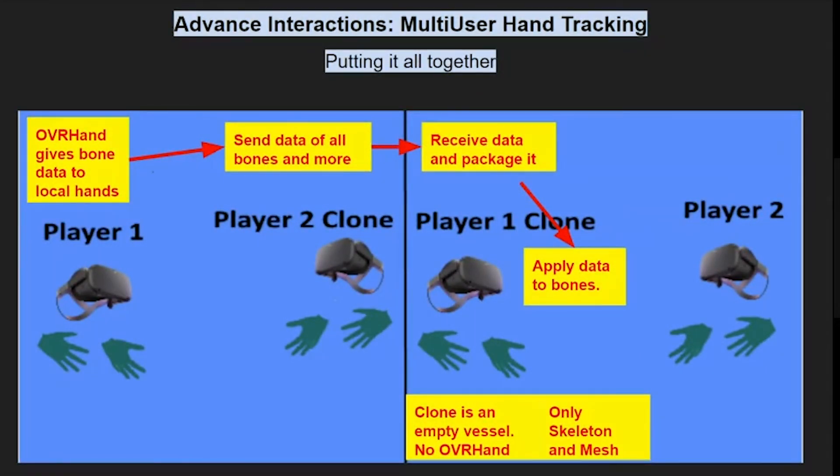Just a quick mention - the clones in this example are actually like empty vessels. Ideally, they don't have any logic constantly running on them. We want them to be simple, because we just want them to reflect what the actual player is doing. So the plan is this: